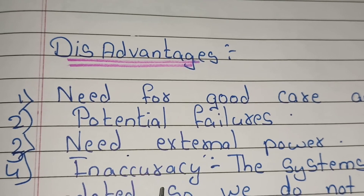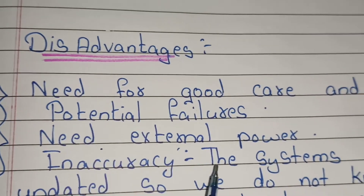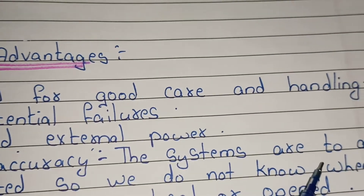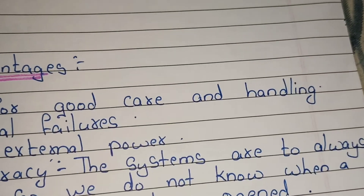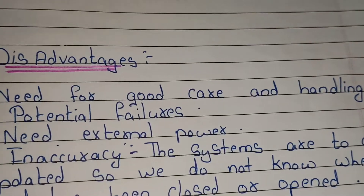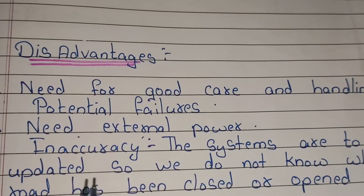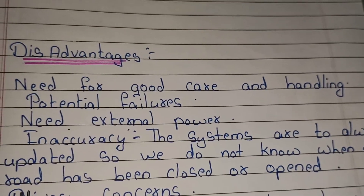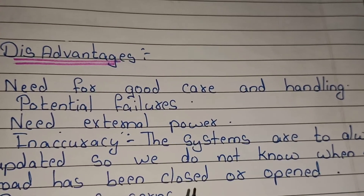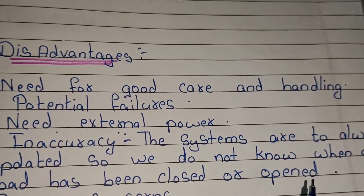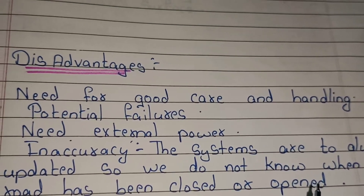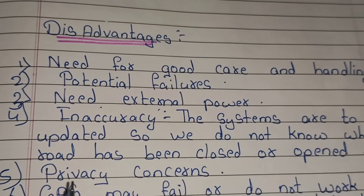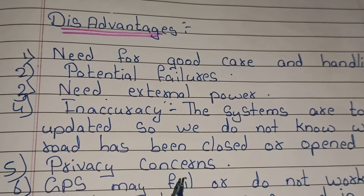Fourth, inaccuracy. The systems are not always updated, so we do not know when a road has been closed or opened. Fifth, privacy concerns.